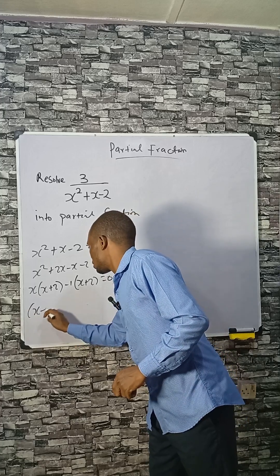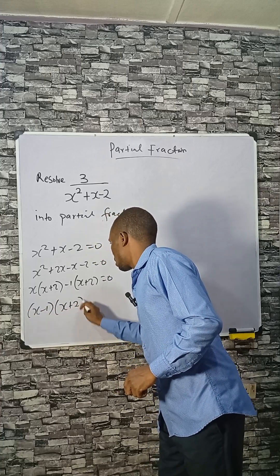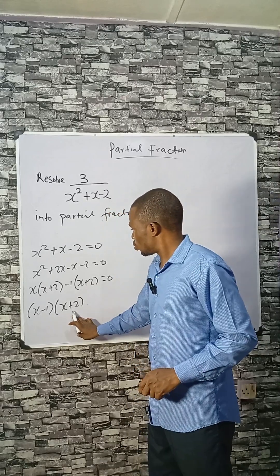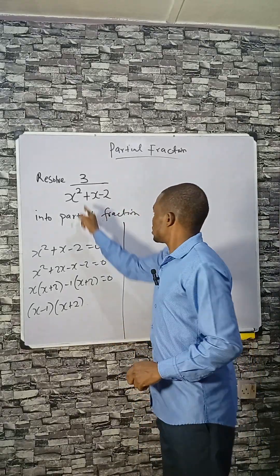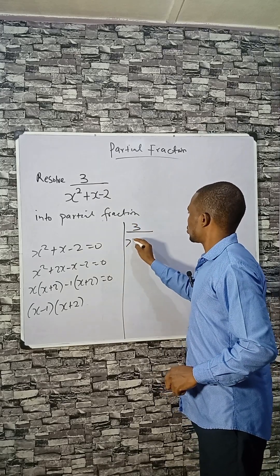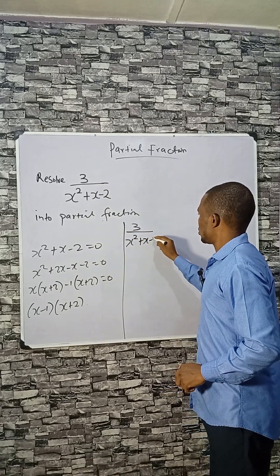So the two factors here are x minus 1 and x plus 2. At this point we can rewrite this as 3 divided by x squared plus x minus 2.